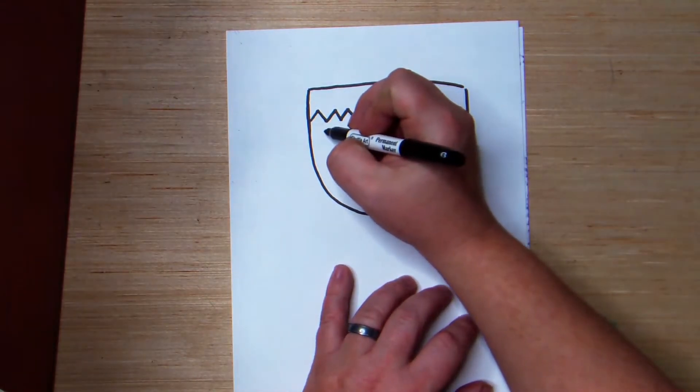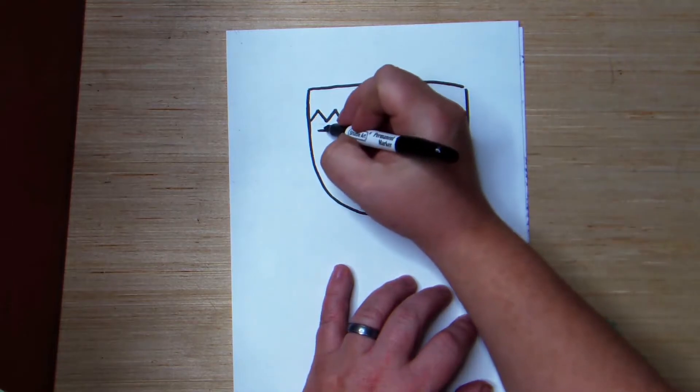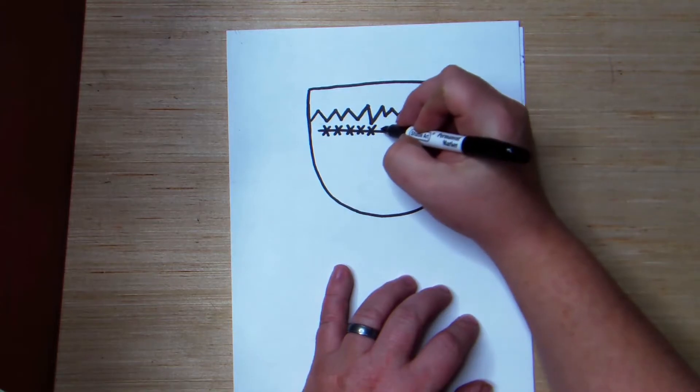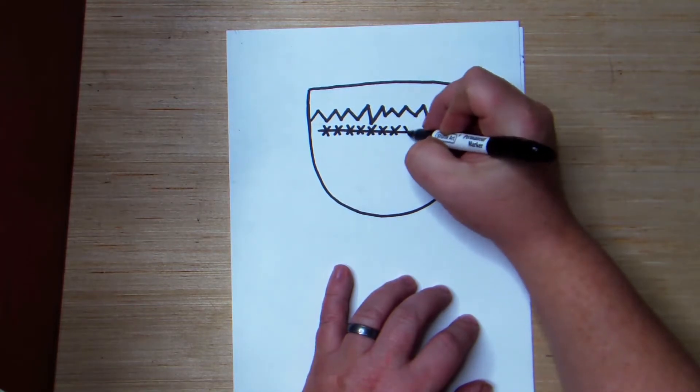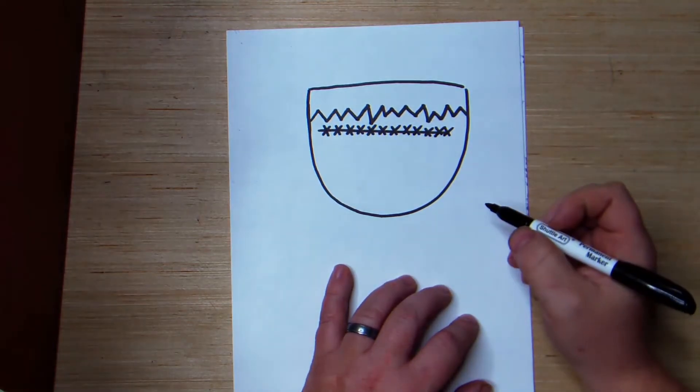Then, I'm going to do a little line here. And on this line, I'm going to add some X's. This is where they put Frankenstein's brain in.